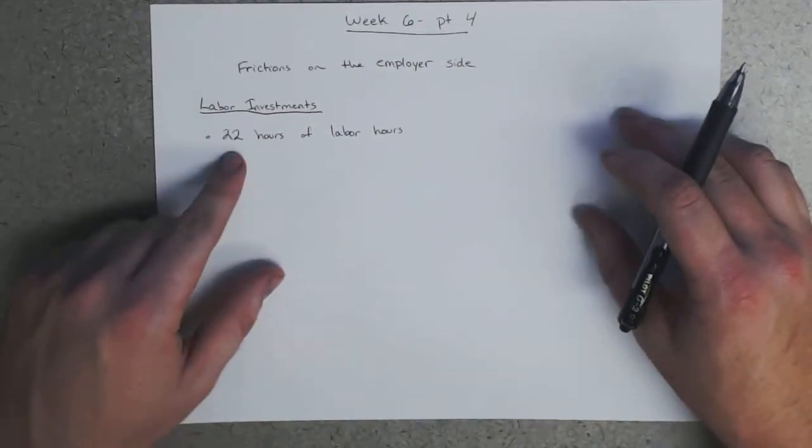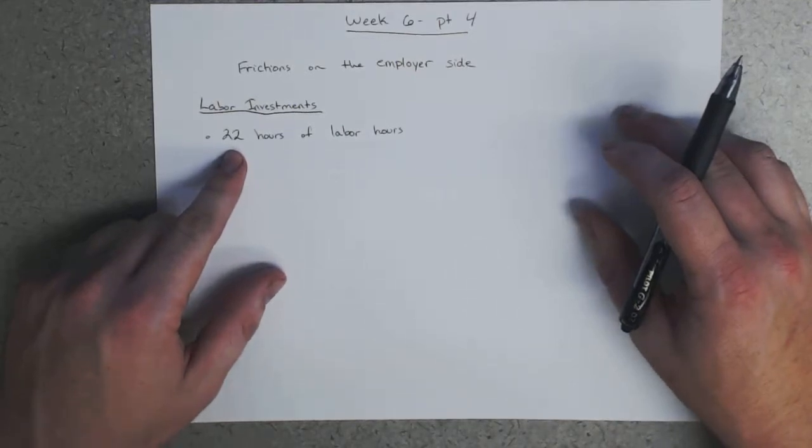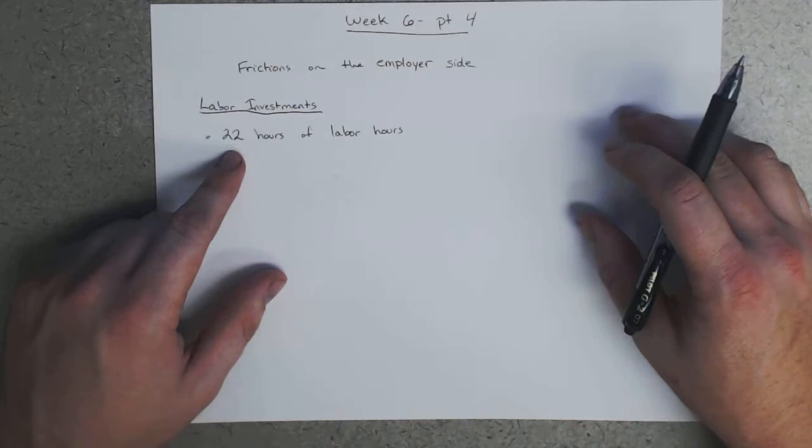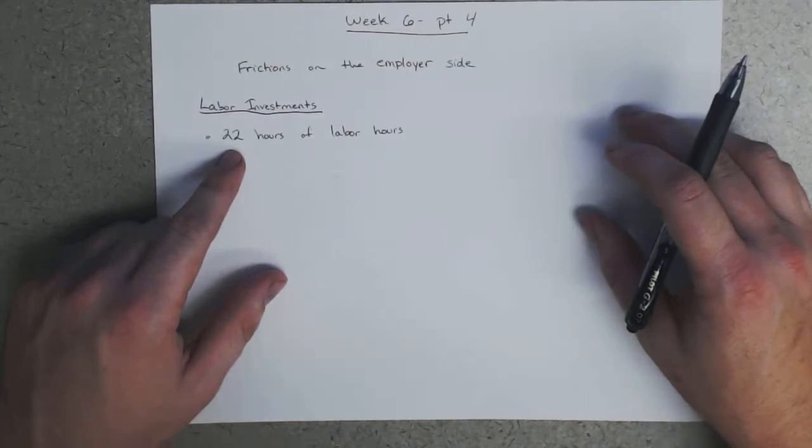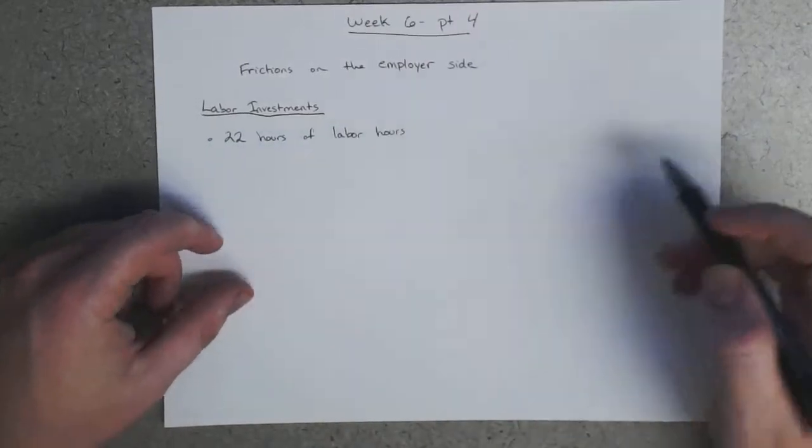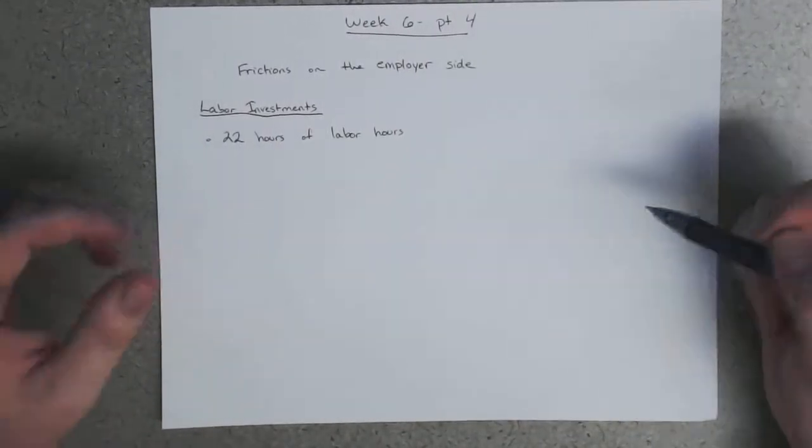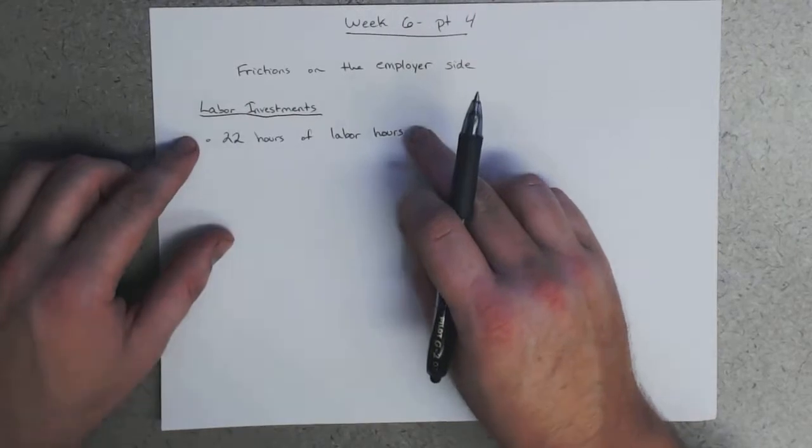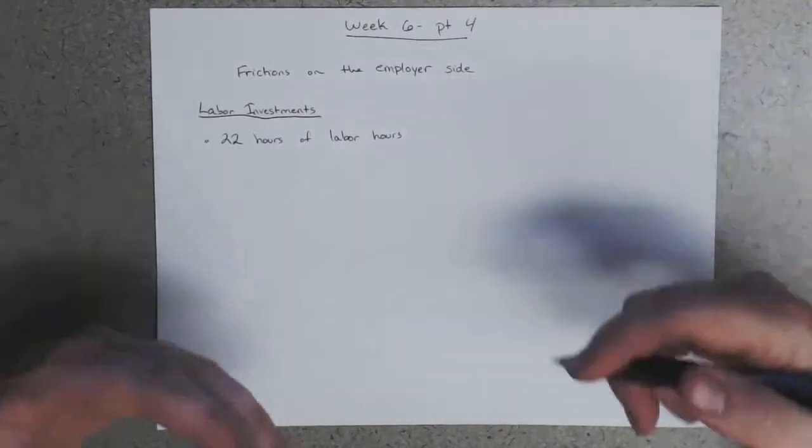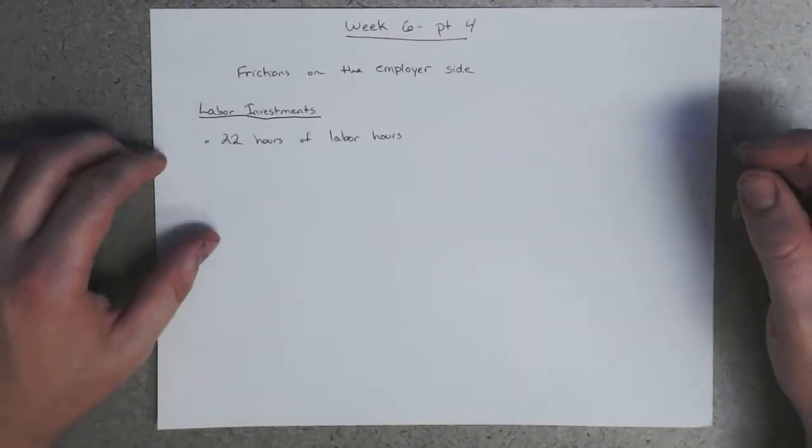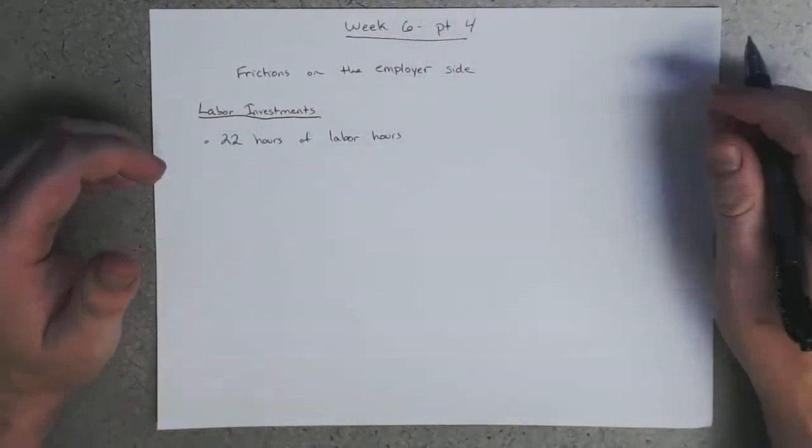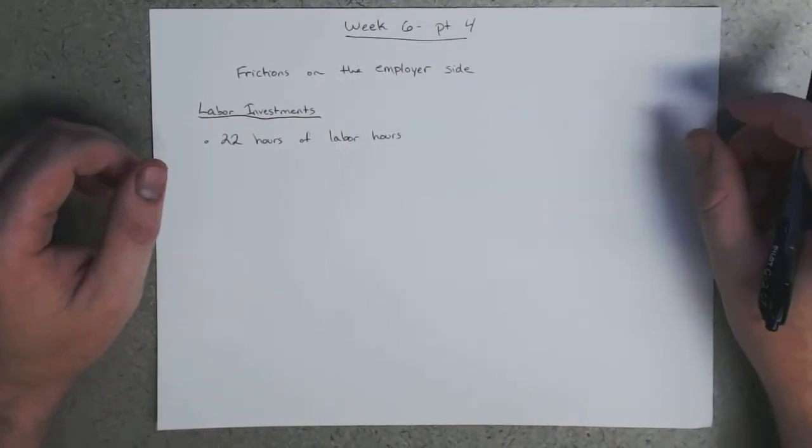Now, this could be split up. You know, it could be two people working 11 hours, or it could be four people working four or five hours and one person working two hours. But the point is 22 hours of productivity that could have been used for productive activities are instead spent looking for a new worker. And so that's a huge cost. And then there's another added cost of potentially terminating an employee.